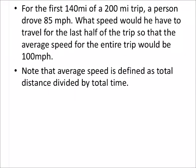For the first 140 miles of a 200-mile trip, a person drove 85 miles per hour. What is the speed this person would have to travel for the last half of the trip so that the average speed for the entire trip would be 100 miles per hour? Note the average speed is defined as total distance divided by total time.